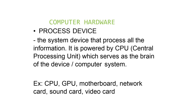A processing device is a system device that processes all the information. It is powered by the CPU, or central processing unit, which serves as the brain of the computer system. Some of the most common processing devices are the CPU, GPU or graphics processing unit, motherboard, network card, sound card, and video card.